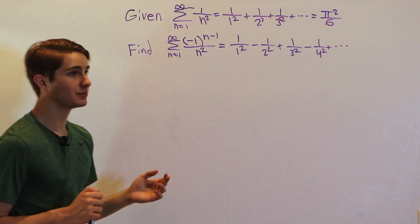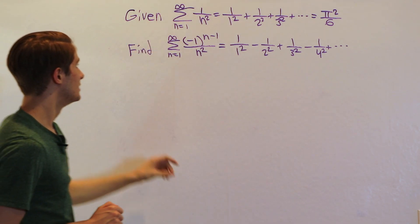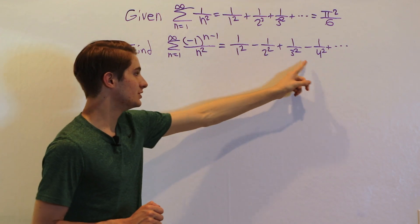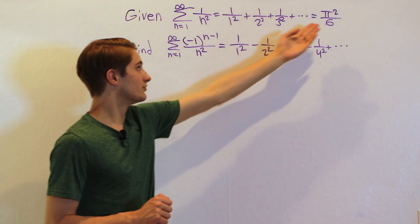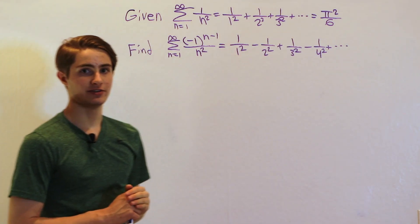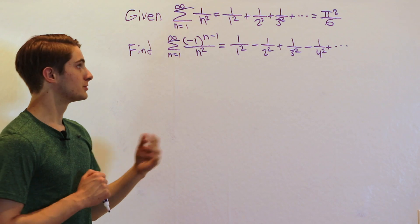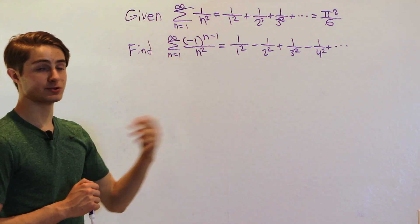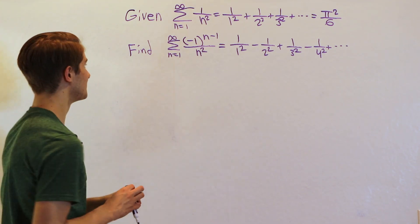The reason that works is that this series is absolutely convergent, meaning that if you take the absolute value of each term and add them up, it still converges to a finite value. That means we are allowed to play around with the sums a little bit and add and subtract things to get to the right answer.